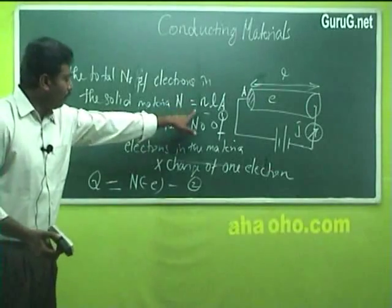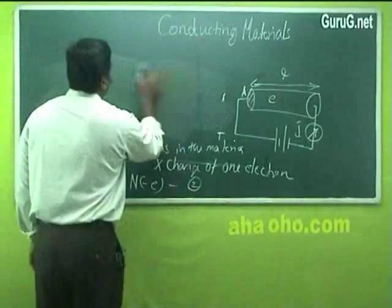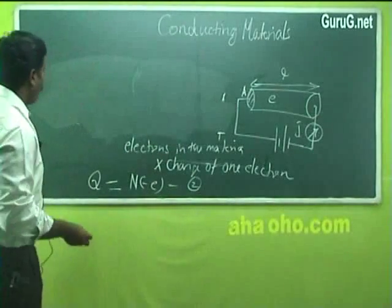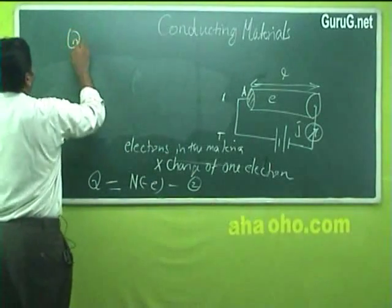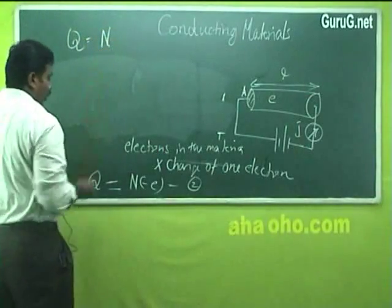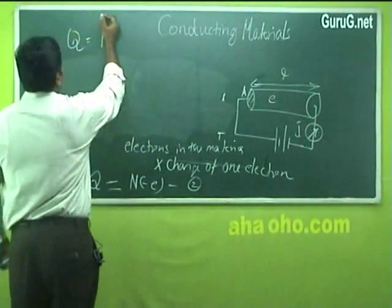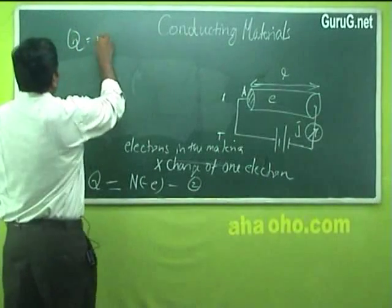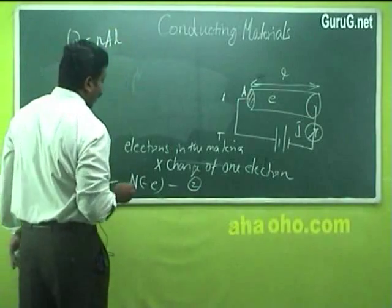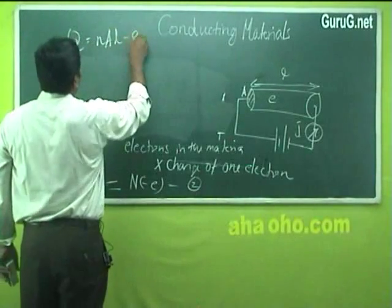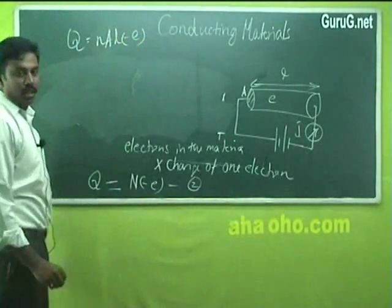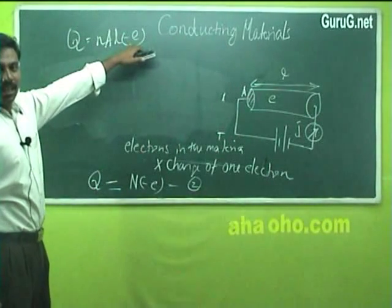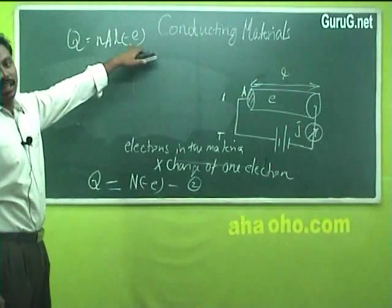Substituting the value of N from equation 1 into equation 2, the total charge Q is equal to n × A × l × (−e). The negative sign indicates that the conduction is mainly due to electrons.